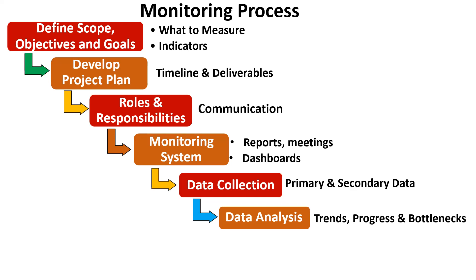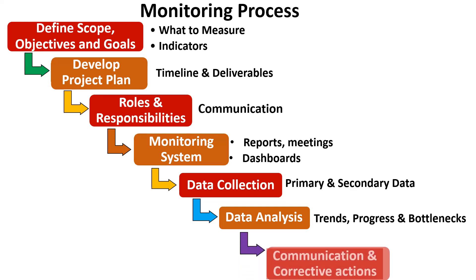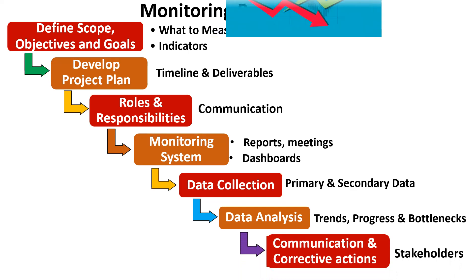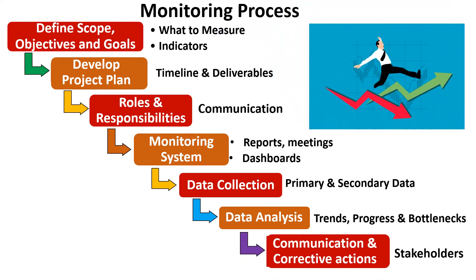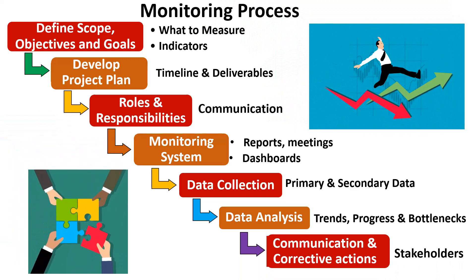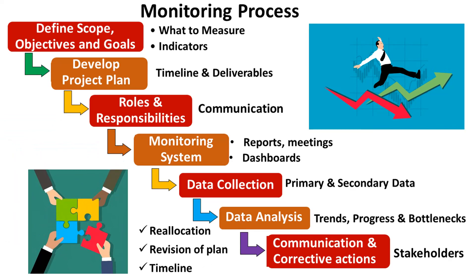Ultimately, based on the analysis, we need to communicate the progress of the project to stakeholders including team members. We also have to take corrective actions if the project is not progressing well. Corrective actions may include reallocation of resources, revising the project plan, adjusting the timelines and correcting other bottlenecks. This should help get the project back on track.